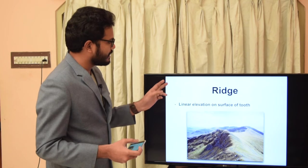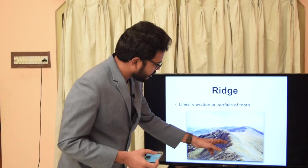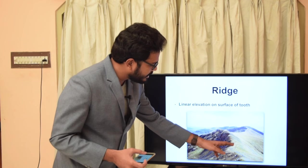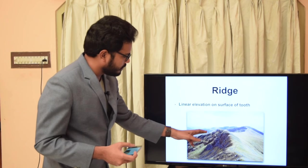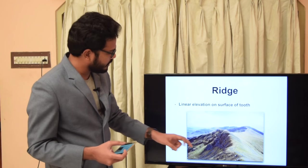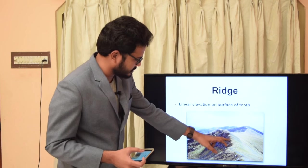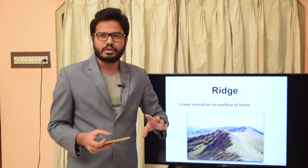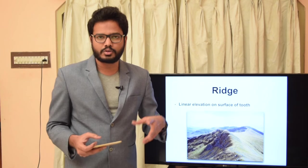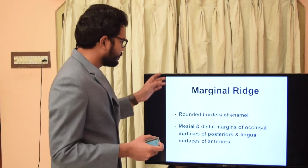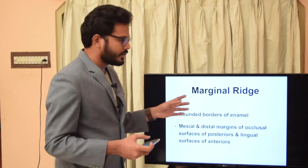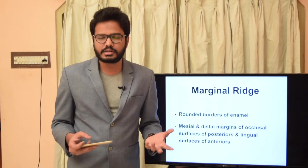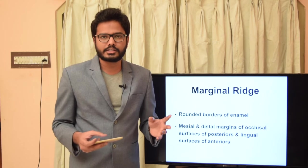The next term is ridge — a linear elevation. Even on teeth we have linear elevations on the occlusal surface. We have different kinds of ridges: marginal ridge, transverse ridge, oblique ridge, and triangular ridge.